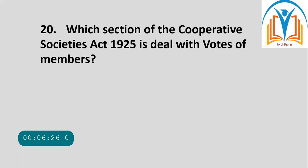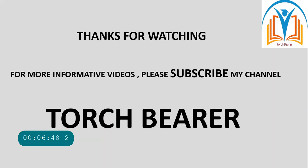Our next question, question number 20: Which section of the Cooperative Societies Act 1925 deals with votes of members? This is Section 18. Section 18 deals with votes of members.